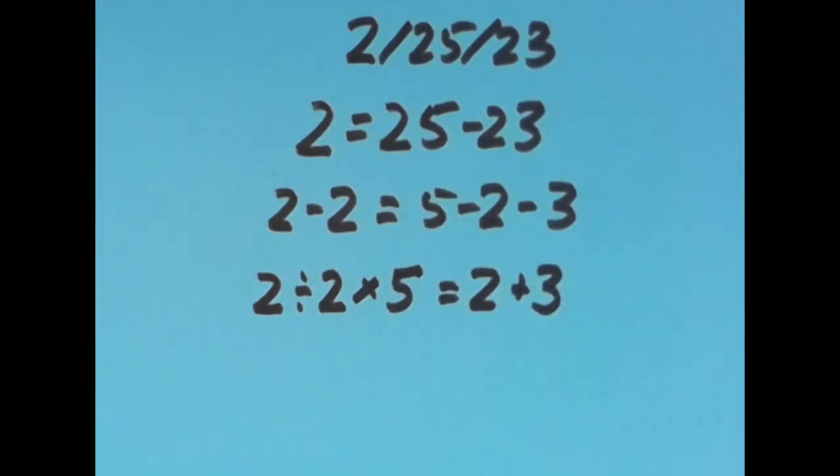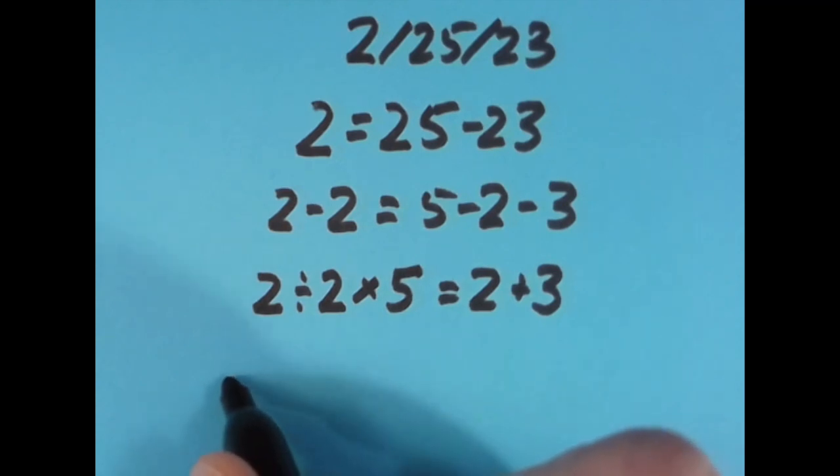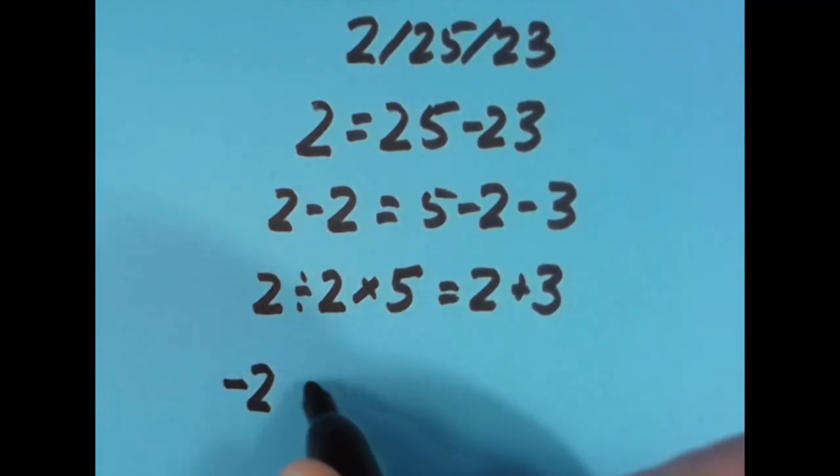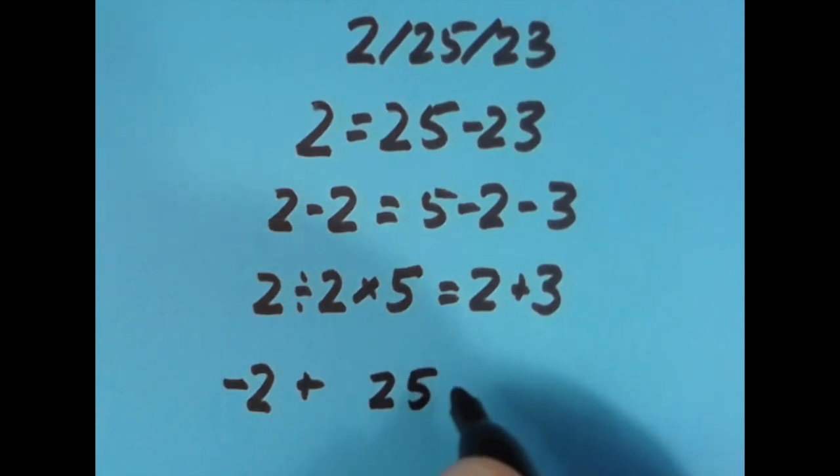And then with the equal sign all the way to the right, I said this. Negative 2 plus. Then I said, let's do 25, and take the square root of 25 to get 5.